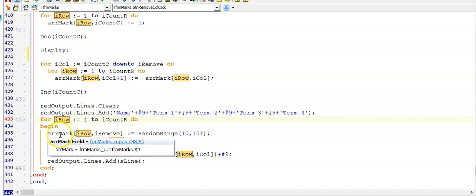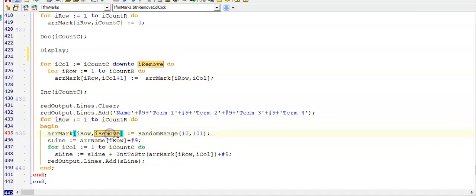Now, this mark here for column iRemove that the user entered is currently holding the same value as the column next to it. So I need to give it a new value. And you were asked to give it a random value. And that's what I'm doing in this part of my code here. And then I'm building my string to be able to display it in my reach edit.